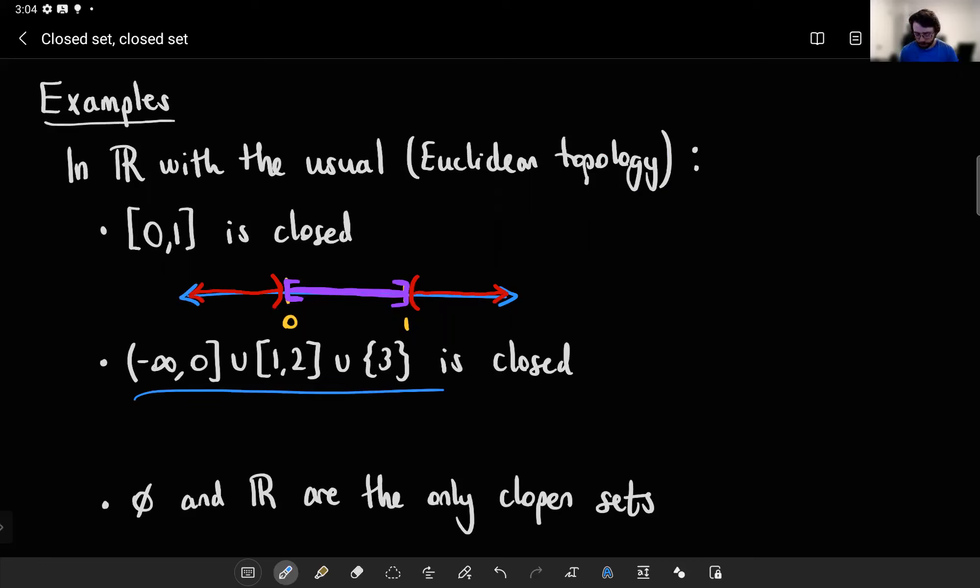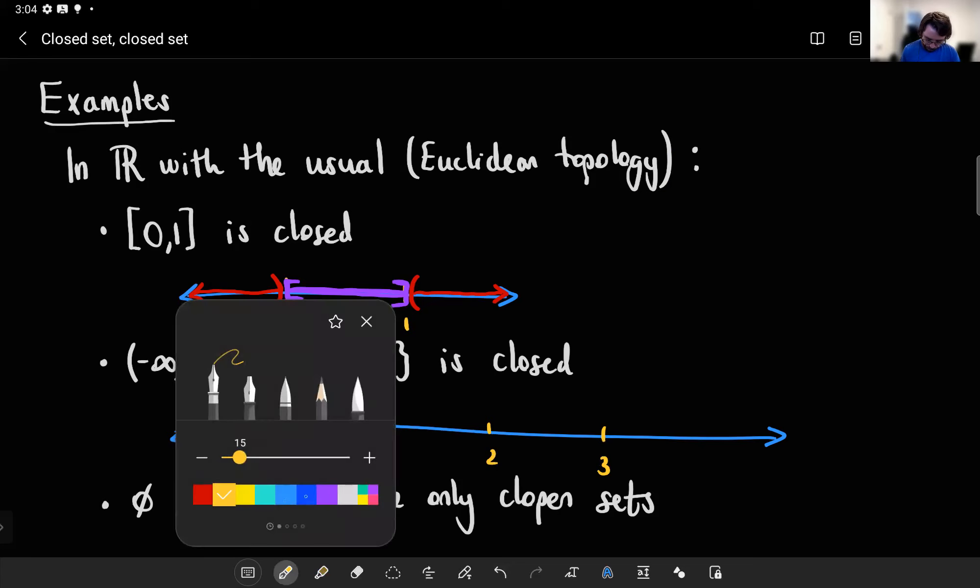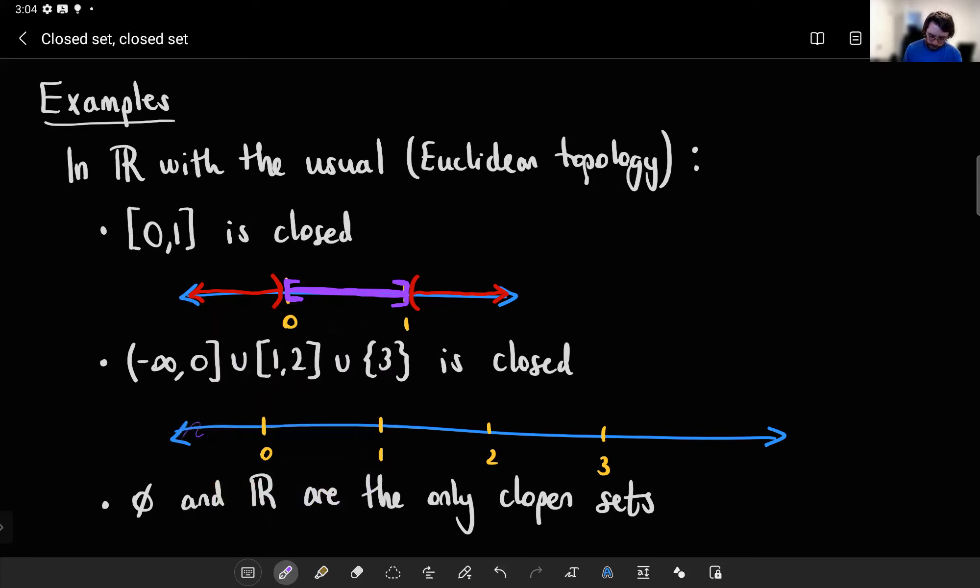What about something weird like this? That turns out to be closed as well. If I drew another number line you would see why. So again, I'll put some points on here. Here's 0, 1, 2, 3. And I'll draw our set in purple. So our set includes everything negative as well as the point 0, it includes everything from 1 to 2 inclusive, and it includes just the single point 3.